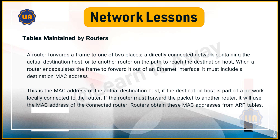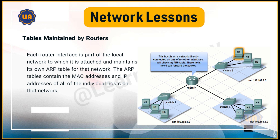A router forwards a frame to one of two places: a directly connected network containing the actual destination host, or to another router on the path to reach the destination host. When a router encapsulates the frame to forward it out of an Ethernet interface, it must include a destination MAC address. This is the MAC address of the actual destination host if it is part of a network locally connected to the router. If the router must forward the packet to another router, it will use the MAC address of the connected router. Routers obtain these MAC addresses from ARP tables. Each router interface maintains its own ARP table containing the MAC addresses and IP addresses of all individual hosts on that network.